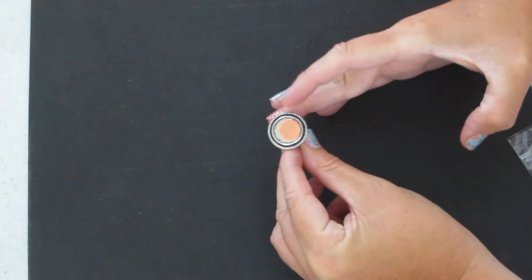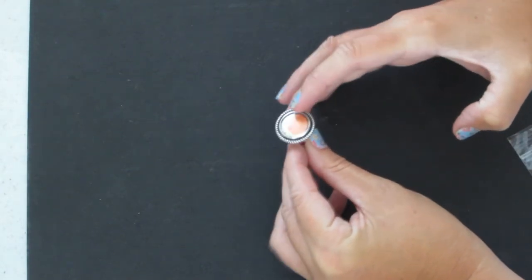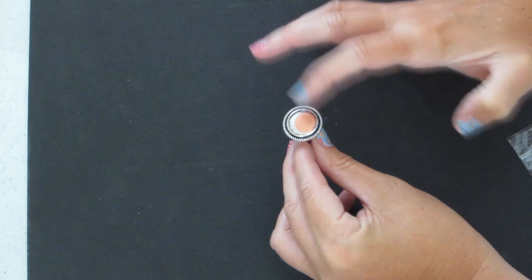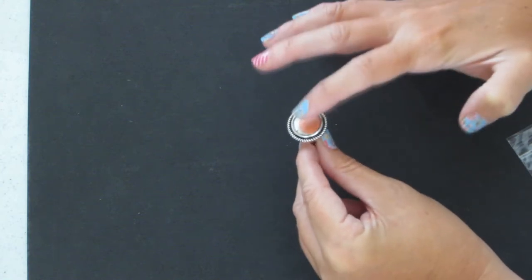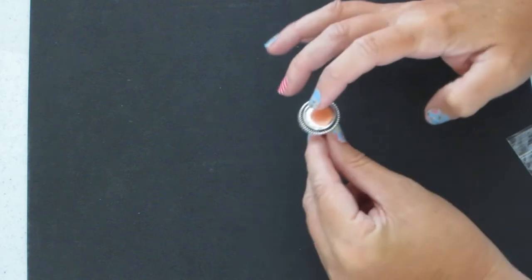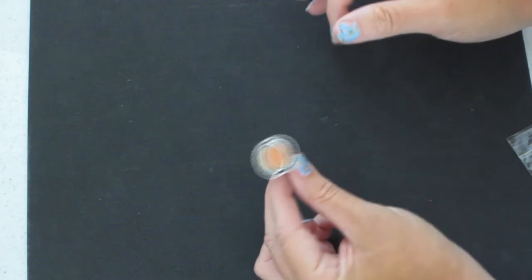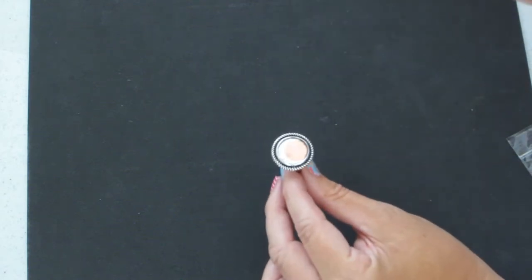The first thing I did is inside the ring I put—they sell like a glue dot, a super strong glue dot that goes right down inside the ring there. I haven't peeled the top layer off yet because I want to wait until I'm ready to put my image in. You can put any kind of image inside here but I thought it would be fun to do a stamped one.